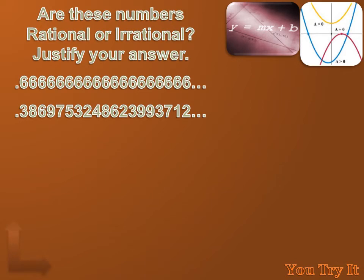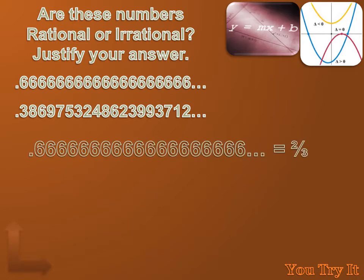Well, we're supposed to figure out if these two numbers are either rational or irrational. The first one, 0.666 repeating. Well, that equals 2 thirds. And 2 thirds is a fraction. So 0.6 repeating is a rational number.